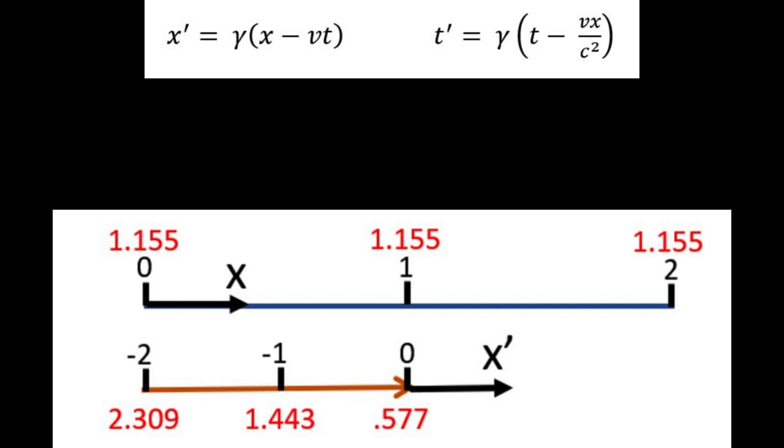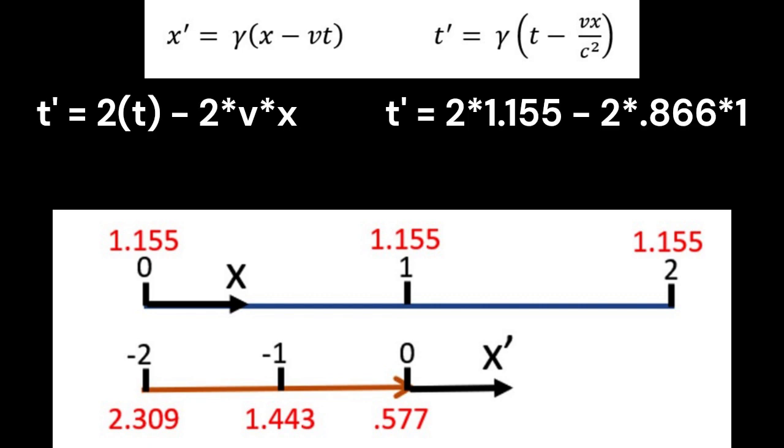Although algebra is algebra and this works out, another thing I saw in here was if you take that t-prime equation and you distribute the gamma across the two terms you get t-prime equals 2 times t minus 2 times vx. So that takes you here, 2 times t and then time skewing times 2 because it's in the other frame where the lengths are twice as short. So you get to the 0.577 this way too.